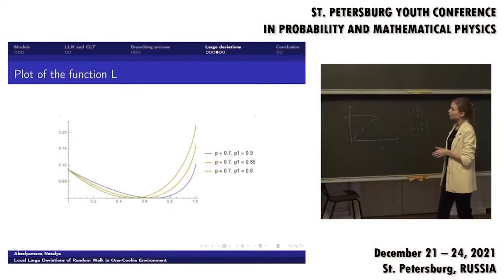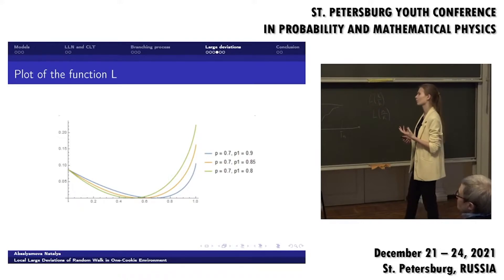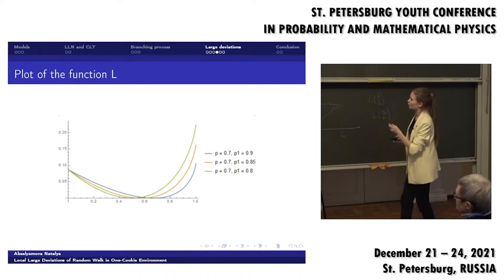So we can see if we have one probability for simple symmetric random walk and different probabilities for our cookies, then the mathematical expectation goes to the left when the probability of cookies becomes less. And we can see and estimate the effect of one cookie for small probabilities.